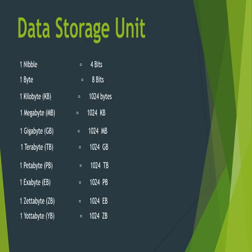Similarly, if you increase your data — if you are going to store an image or any document — it will need more storage units. After byte, you can store your data in kilobytes: one kilobyte equals 1024 bytes. Then after kilobyte there is megabyte, then gigabyte, terabyte, petabyte, exabyte, zettabyte, and yottabyte.